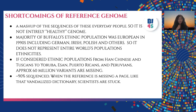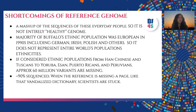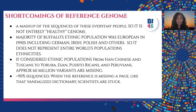There are a few shortcomings of the human reference genome. First, although it is a mashup of sequences from everyday people, we all possess some disease, so this is not an entirely healthy genome. Second, the majority of the Buffalo population at that time was European — including German, Irish, and Polish — so it does not represent the entire world population by ethnicity. A study comparing ethnic populations such as Han Chinese, Tuscans, Europeans, Portuguese, and Peruvians found that 60 million variations are still missing from the reference genome.